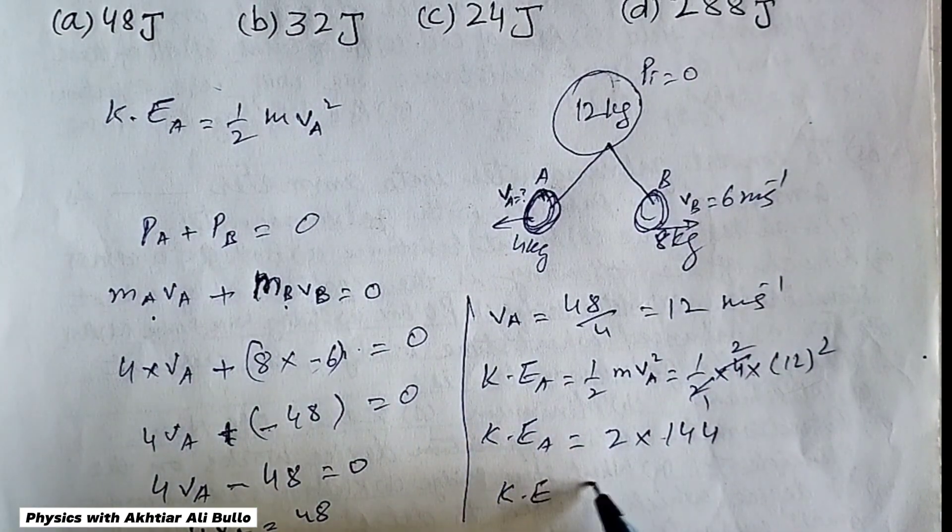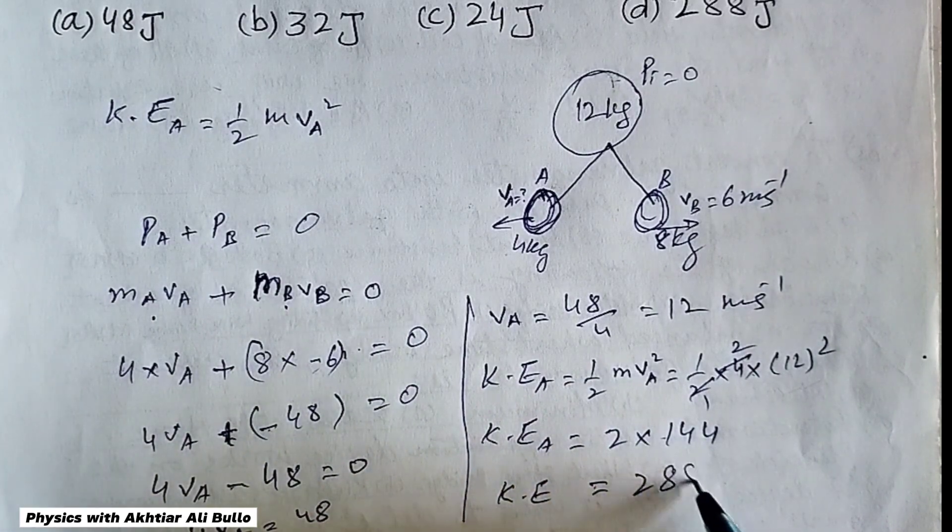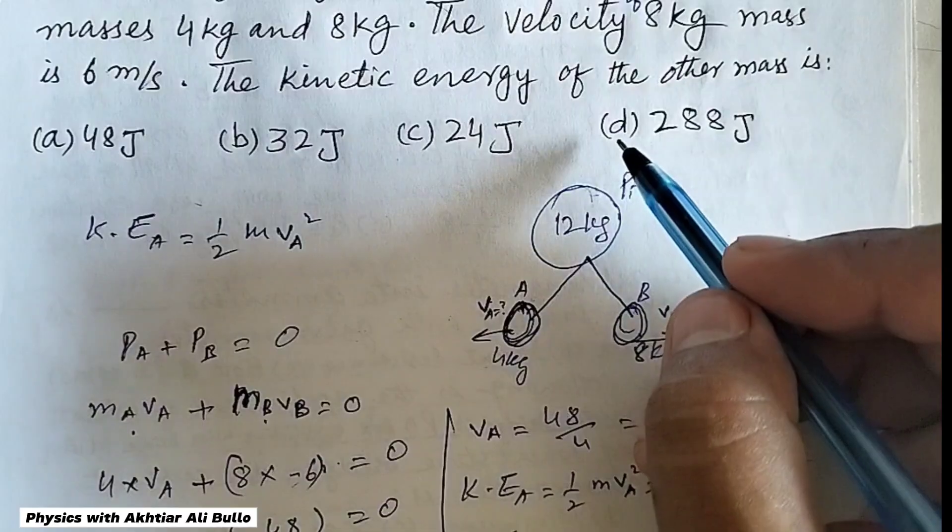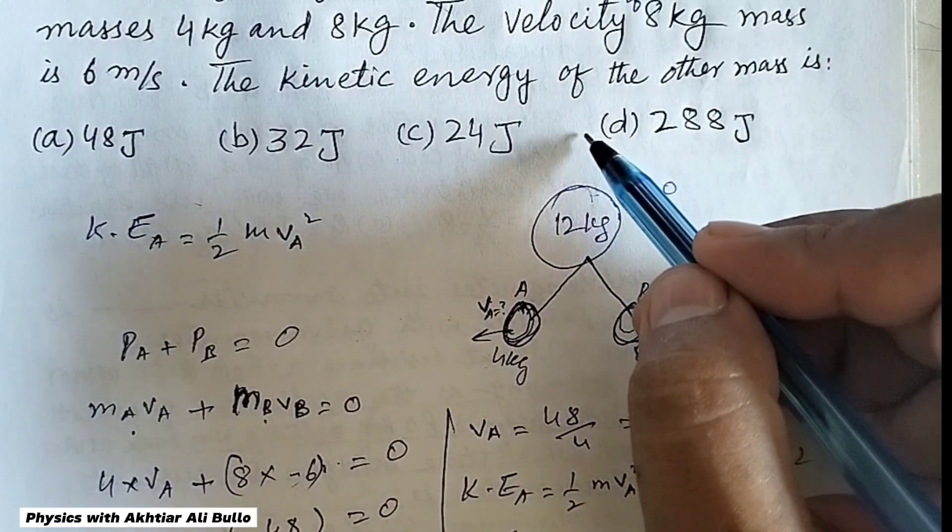So kinetic energy will be obtained as 288 Joule, so the correct option will be D, 288 Joule.